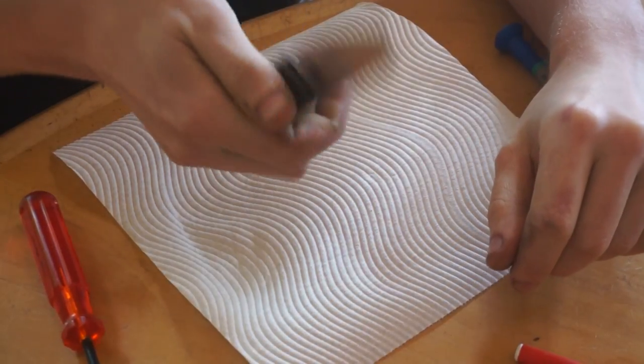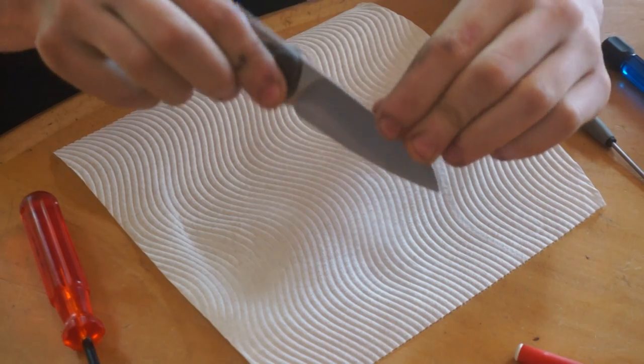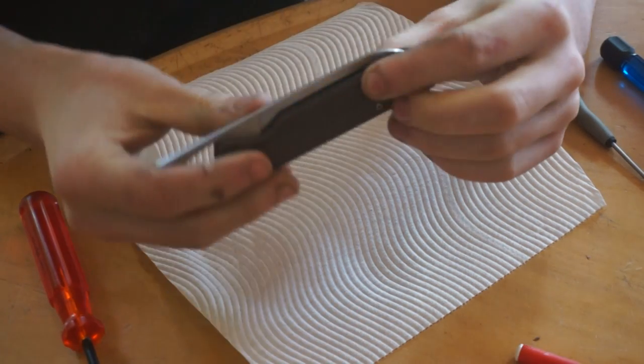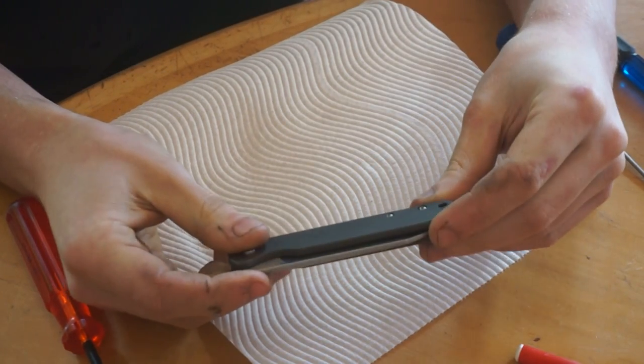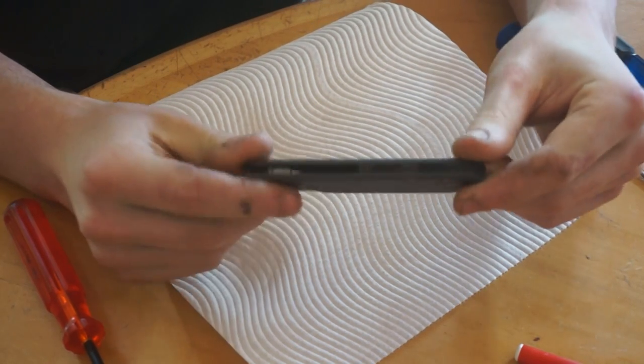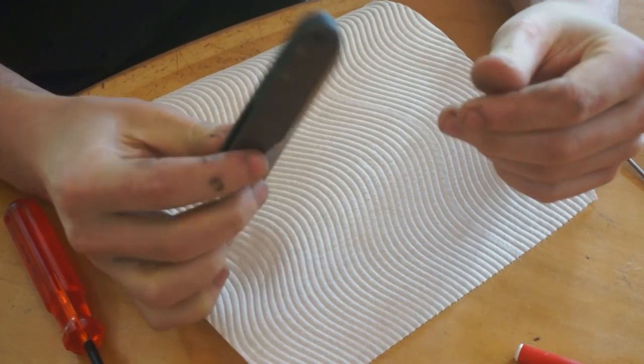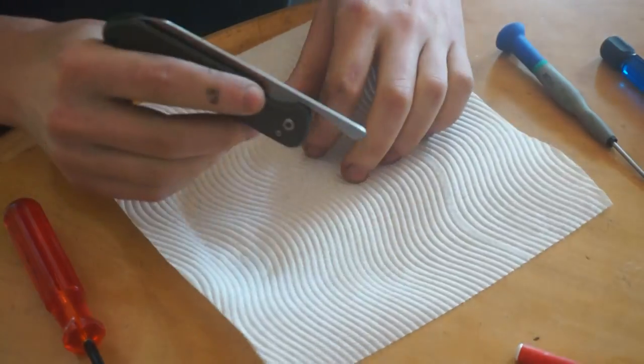So today we're going to do a bit of an assembly video on one of these friction folders. The reason being is I've made quite a few of these now and there's plenty of these in the world. So I figured I might as well do a video on centering one of these things, taking it apart, maintenance, all that sort of stuff because these are particularly difficult to center if you're not doing them right.